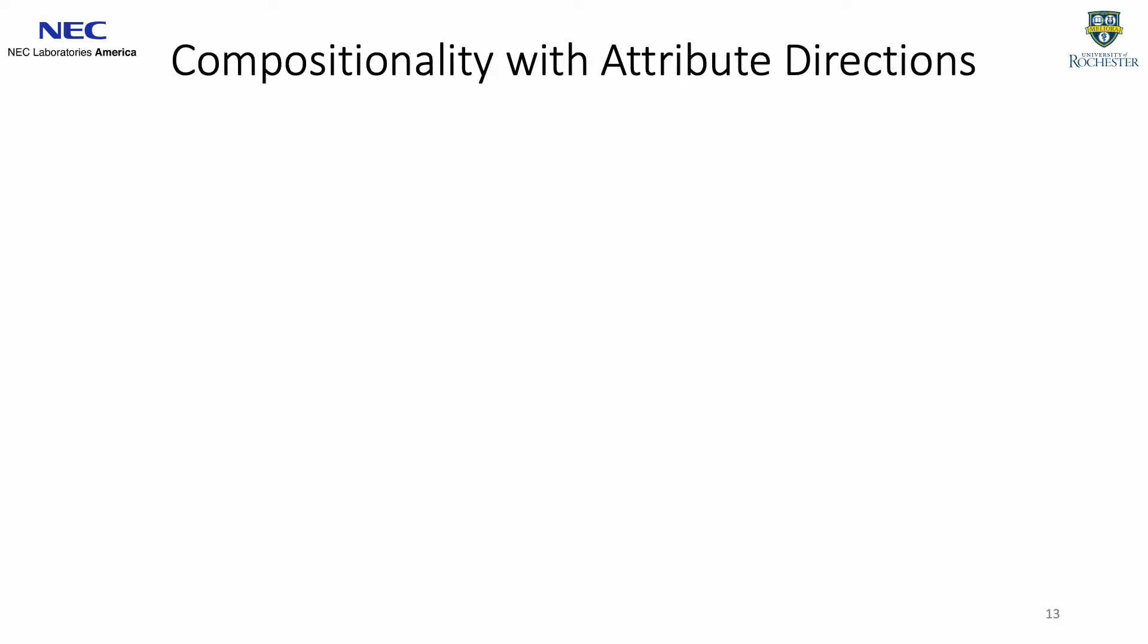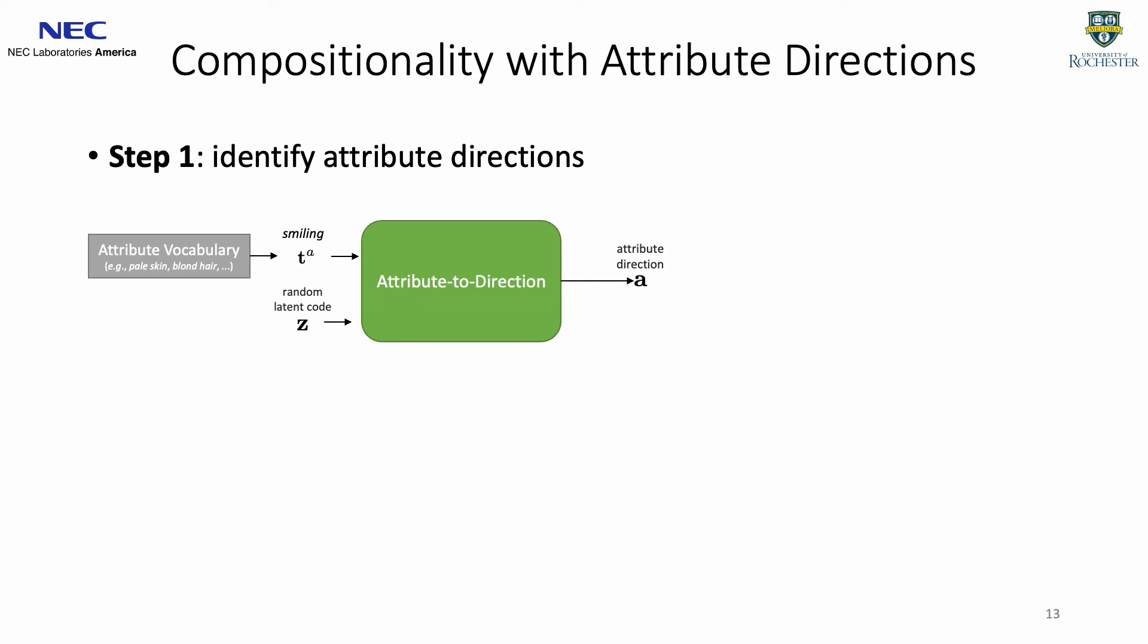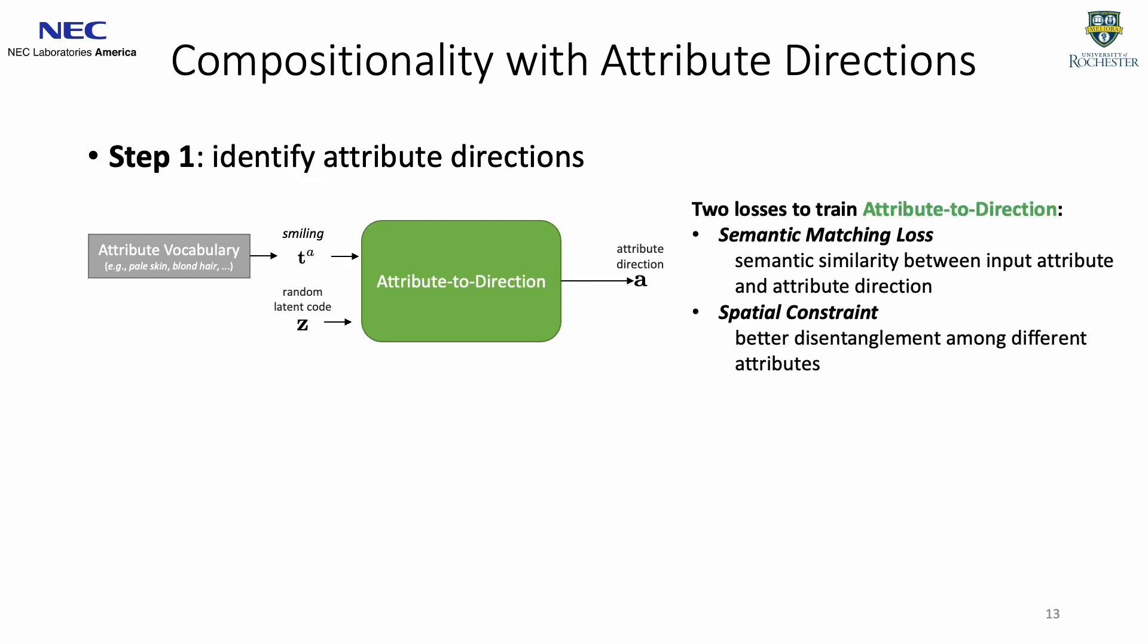To further improve compositionality, we leverage attribute direction, a disentangled representation in StyleGAN's latent space. It contains two steps. In the first step, we train an attribute direction model to predict the attribute direction for each attribute in the attribute vocabulary in a given dataset, such as blonde hair or smiling in a face dataset. The attribute direction model is trained with two losses: a semantic matching loss and a spatial constraint. More details are shown in the paper.